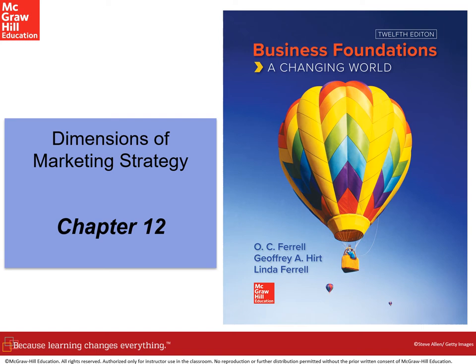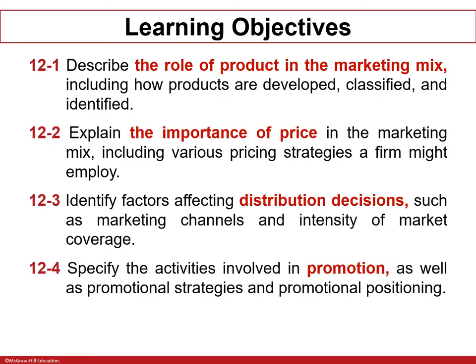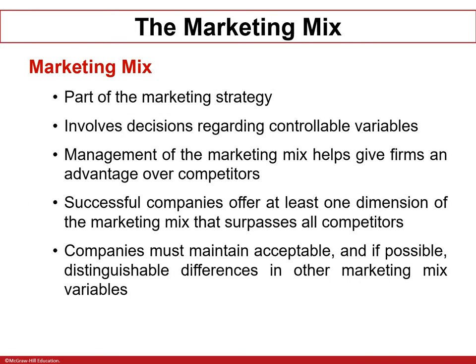Welcome to the review of chapter 12. In this chapter we will focus on the dimensions of marketing strategies. As you know, in the previous chapter we discussed the concept of marketing. In this chapter we will elaborate more about the role of the marketing mix and its importance in each key dimension. The marketing mix consists of four components: product, place, price, and promotion — that is basically the 4Ps.